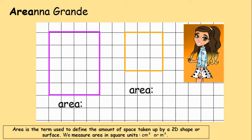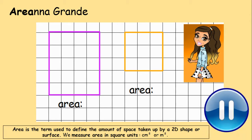We're going to start with Ariana Grande. Area is the term used to define the amount of space taken up by a 2D shape or surface. We measure area in square units, centimetre squared or metre squared. I would like you to work out the area of both of these shapes. Press pause now to have a go and then press play once you are ready.